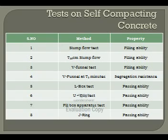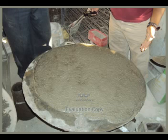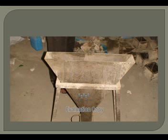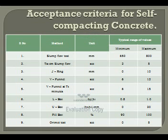The usual tests conducted on self-compacting concrete are tabulated, showing the method and the property for which each is done. These include the flow table test, V-funnel apparatus, L-box apparatus, and U-box. The acceptance criteria and typical range of values for self-compacting concrete for different tests are also shown.